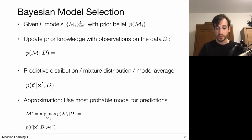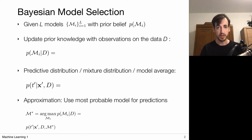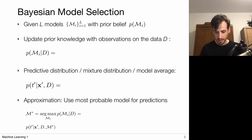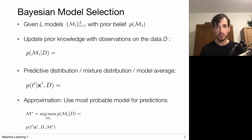I'm going to consider multiple such models where the index i represents the type of basis functions used. For example, one model relies on Gaussian basis functions, others on polynomials, and we could try different orders of the polynomials. So really the index i covers all the options I'm considering. Before I start comparing models, I might have a prior belief over them — maybe one model is believed to be more appropriate than others, and that's encoded in my prior.